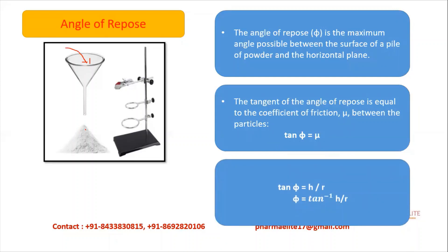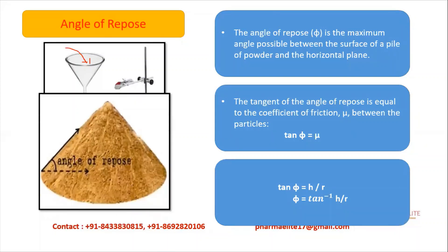We pour powder over the funnel and it forms a heap. We trace the heap and draw a circle; from the circle we get the diameter, which is divided by 2 to get the radius. We then measure the height of the heap with a scale. Now we get the angle of repose: tan theta is equal to h divided by r. This is the angle of repose theta.